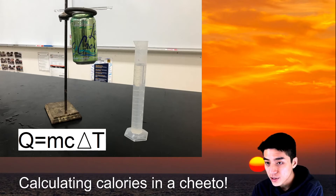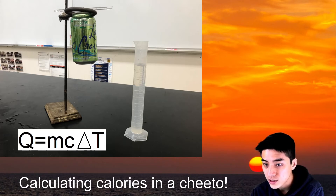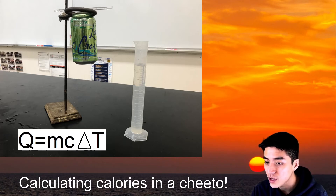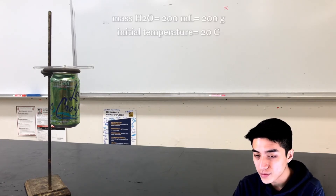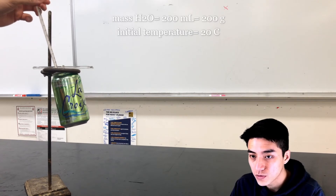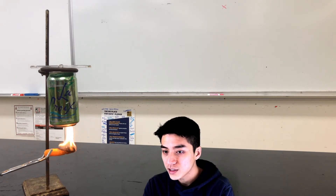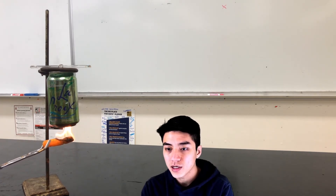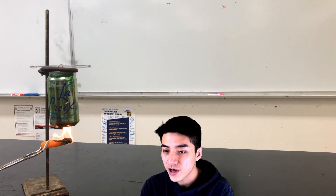I'm going to show you a crude way to calculate the number of calories inside a food sample. I'm going to burn a Cheeto underneath a can that has water in it, then measure the temperature difference before and after, and plug that into the equation Q equals mcΔT to calculate the number of calories. I've poured 200 milliliters — or 200 grams — of water into the can and took the initial temperature, which is around room temperature: 20 degrees Celsius. I've set the Cheeto on fire and will hold it underneath the can until it burns out completely. This could take anywhere between 1 to 5 minutes.